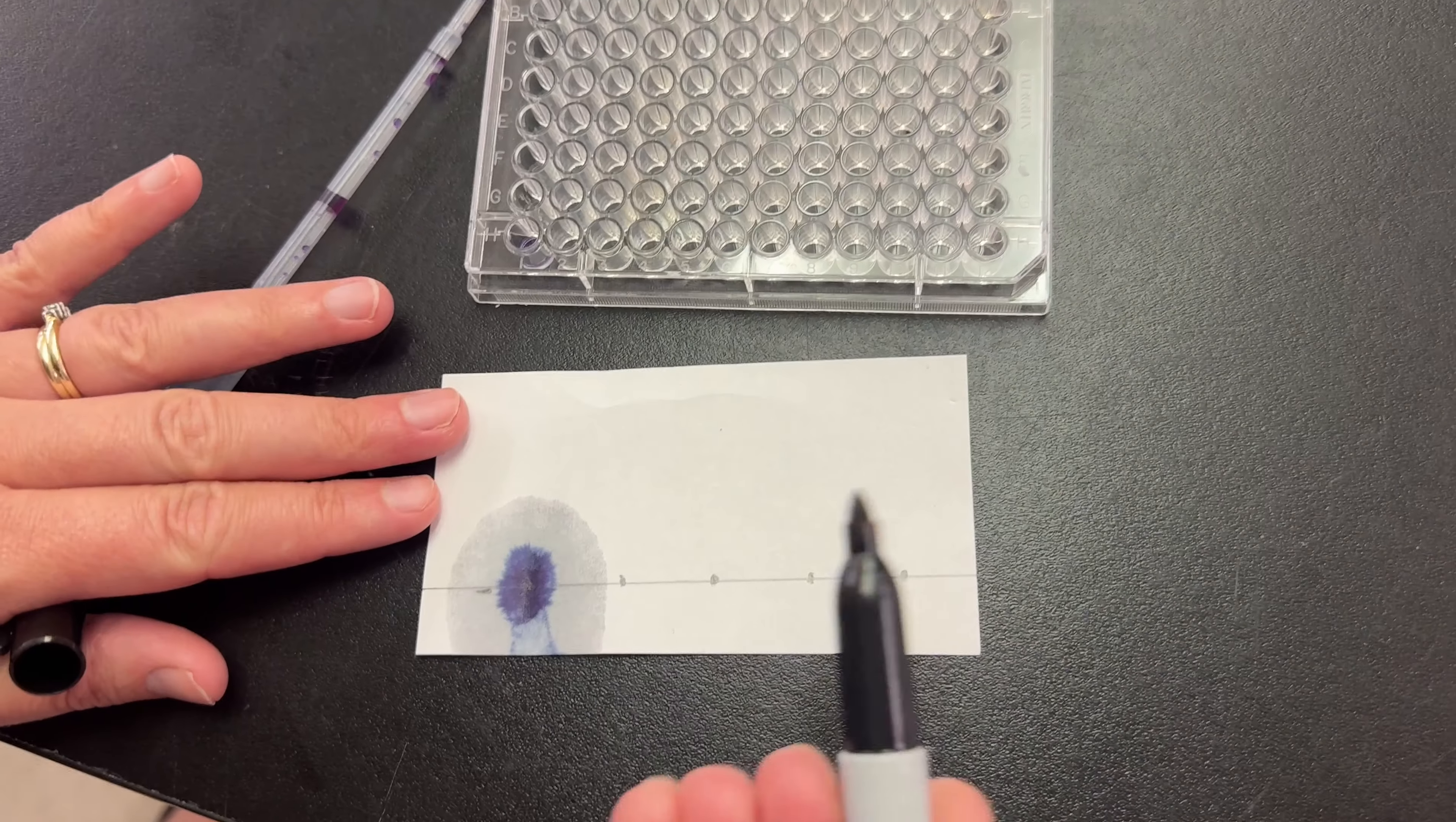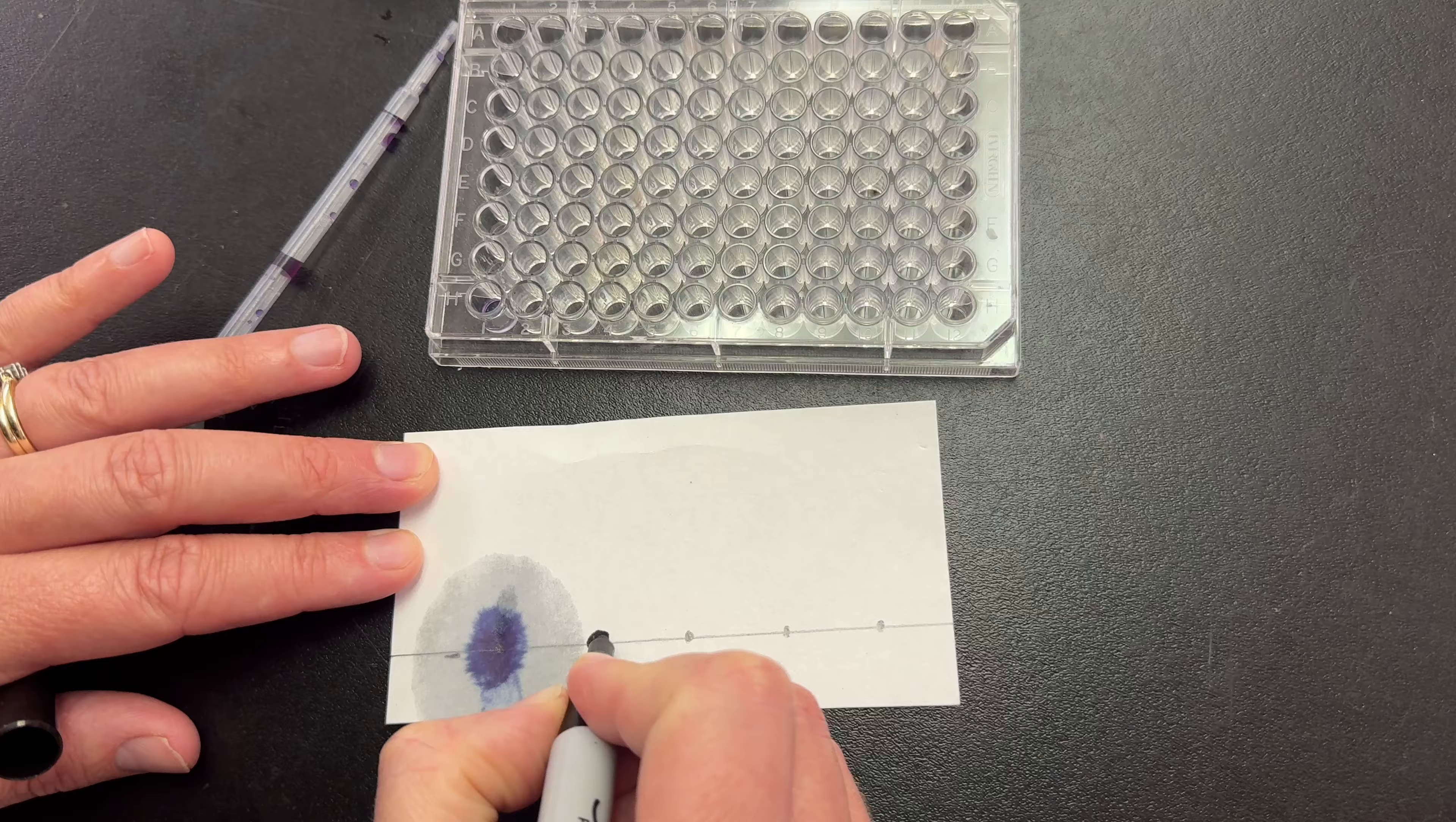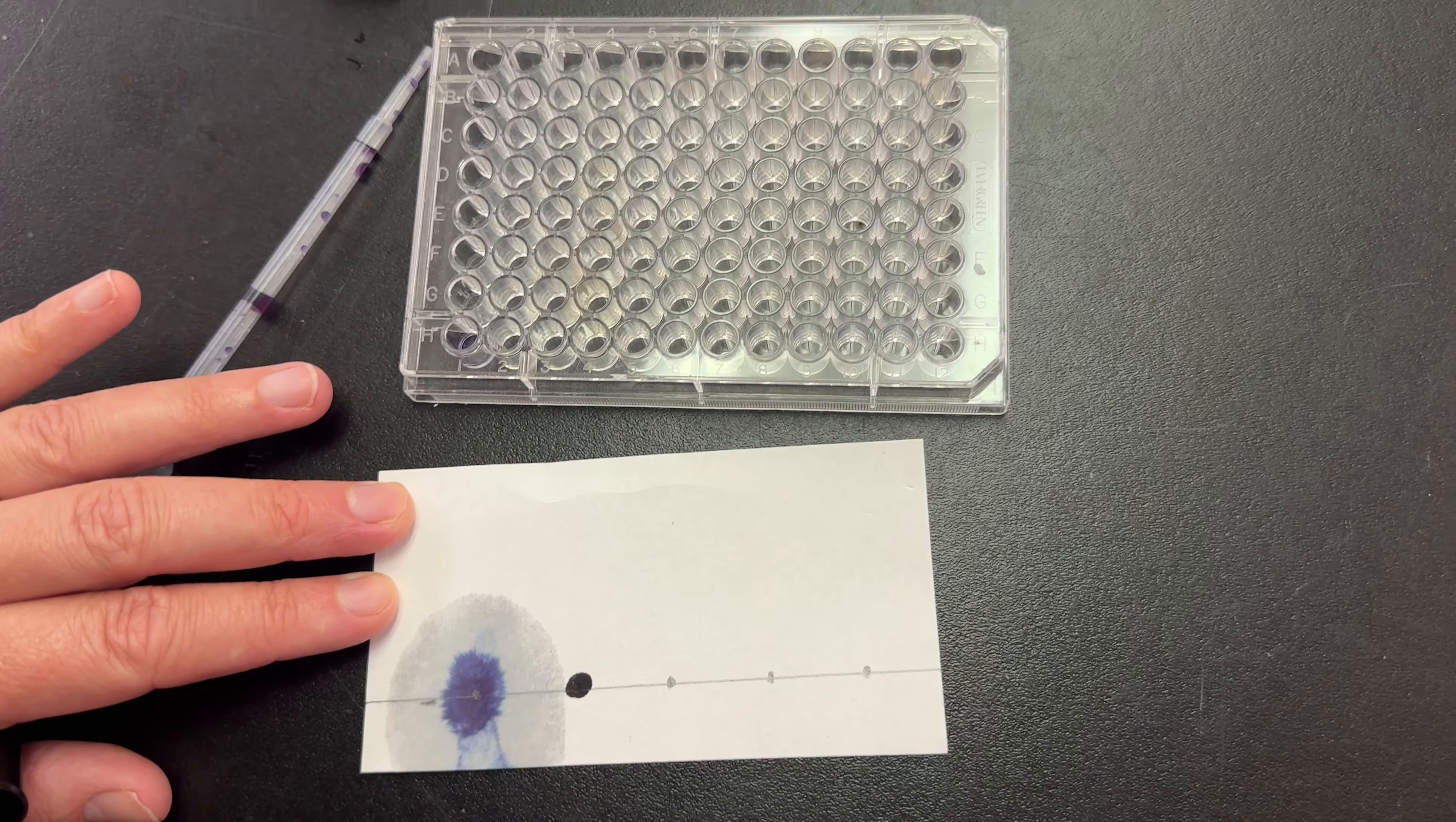Step three: while the paper is drying, use a black felt tip pen to put a dot about three millimeters in diameter on the second spot.